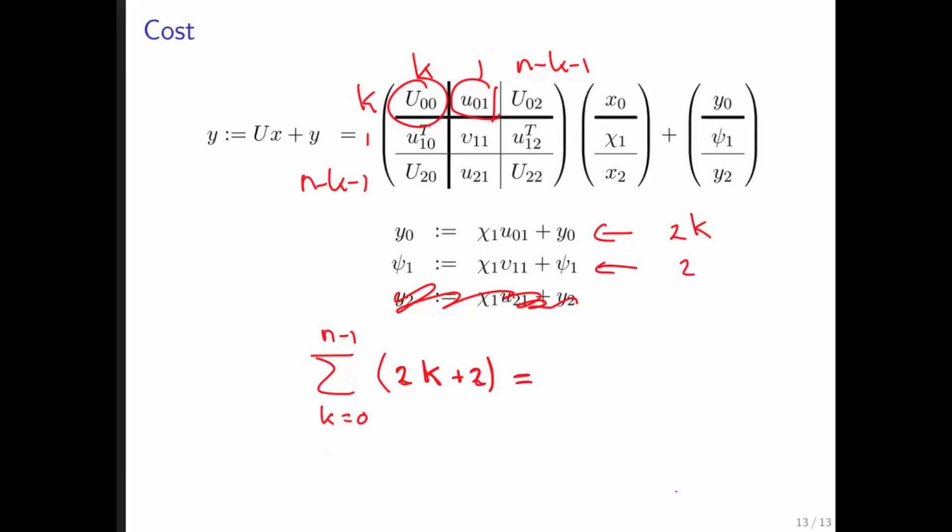You can write that as 2 times the summation of k equals 0 to n minus 1 of k plus 1. But that equals 2 times the sum from k equals 1 to n of k. That's moving this plus 1 into the range over which we sum. In week number 2, we saw that the sum from k equals 1 to n of k is just n times n plus 1 over 2. Then these 2's cancel each other.